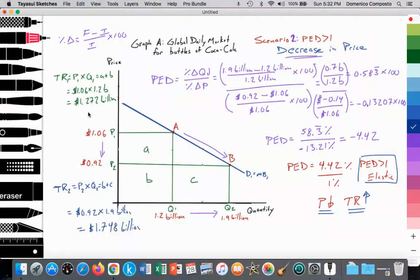So here we can clearly see that total revenue of $1.272 billion, this area here, is less than the new total revenue at $1.748 billion. So it holds as we lower price along an elastic demand curve, the total revenue will rise. And that's it. If you have any questions, you can comment those questions. And don't forget to subscribe and to like. Thank you so much.